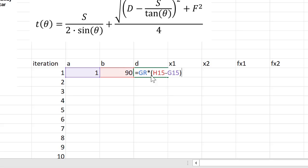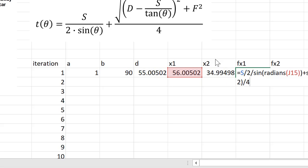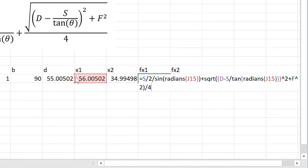d is equal to the golden ratio times b minus a, x1 is equal to a plus d, x2 is equal to b minus d.